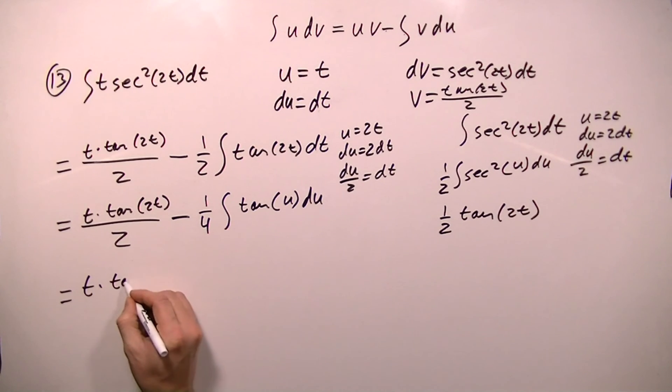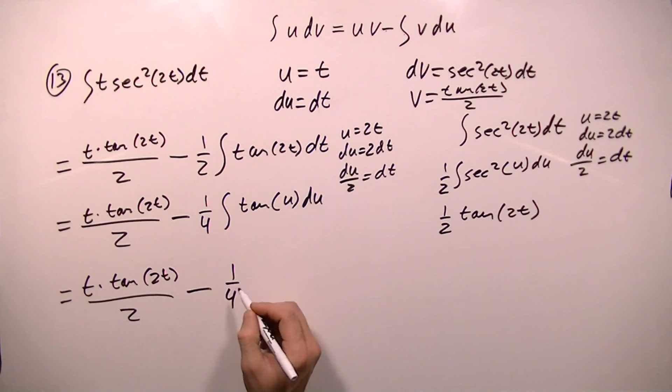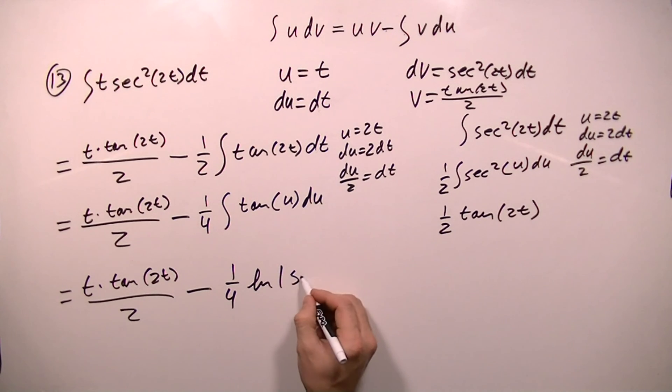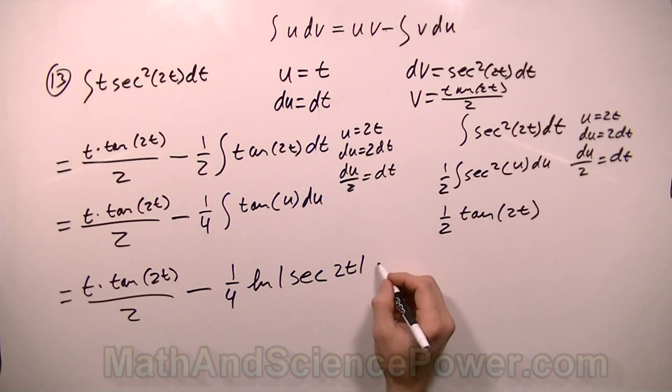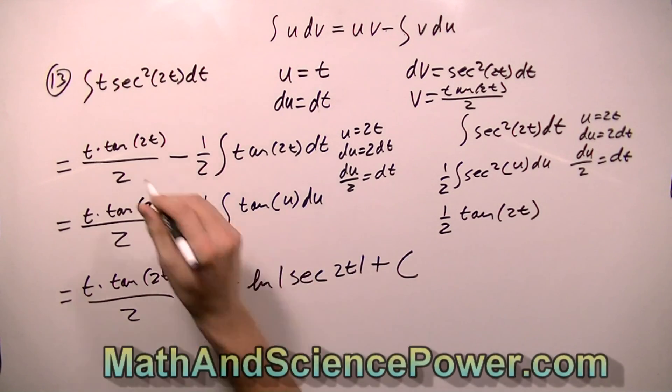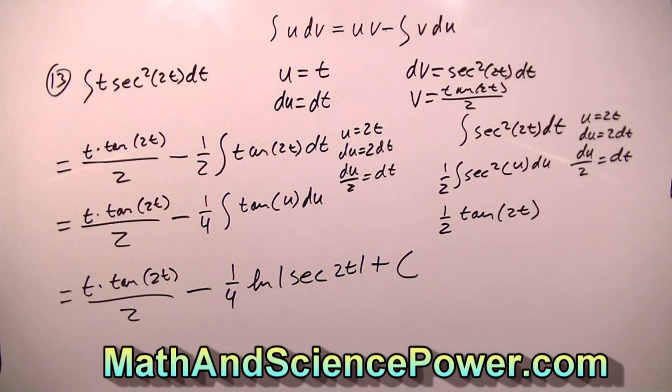and I get t times tangent 2t over 2 minus 1 fourth. And I know that the integral of tangent u is the natural logarithm of the absolute value of secant u. But u is 2t. And I can't forget to add my constant here because we're taking an indefinite integral.